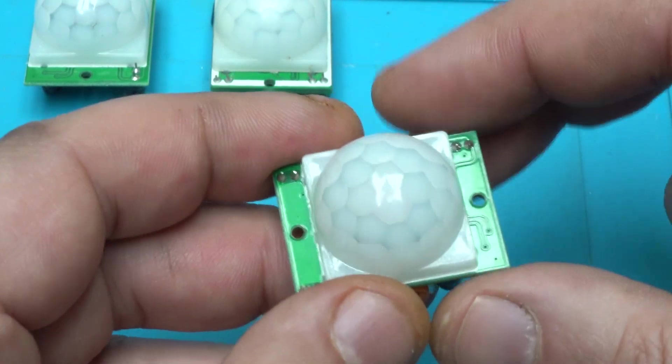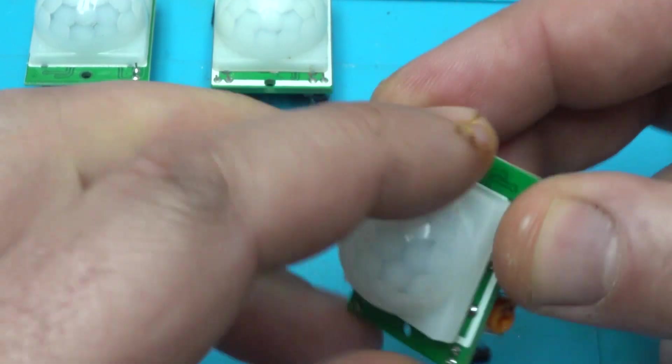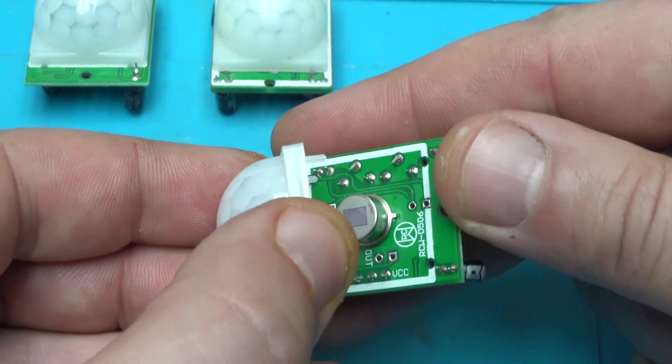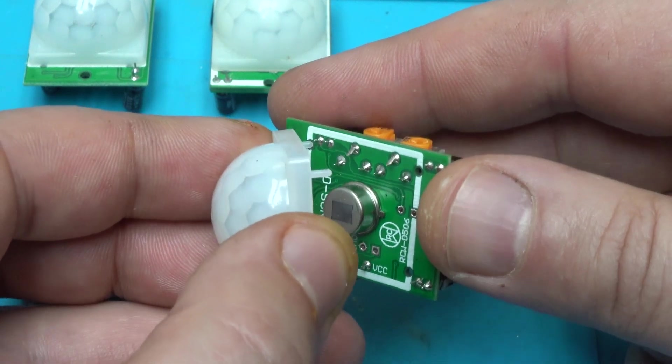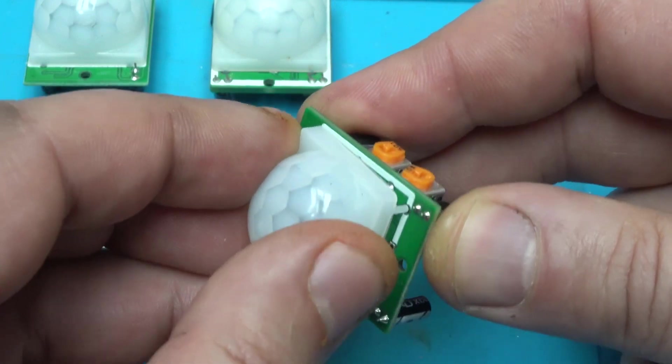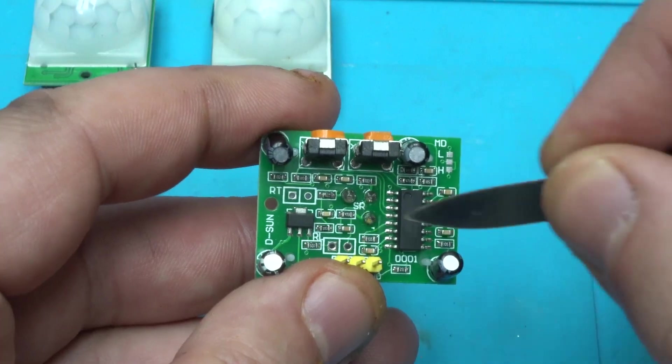Without that photoresistor, if you don't add it, this sensor will work all the time. Some of them have it, some of them don't have it. I am going to open just to see. Yep, there is no photoresistor or photosensor. You need to add it on this spot.